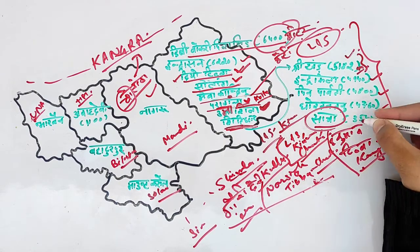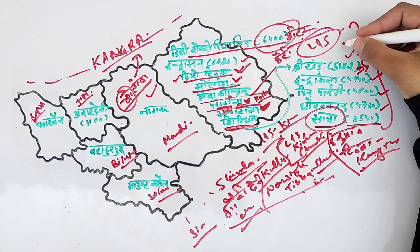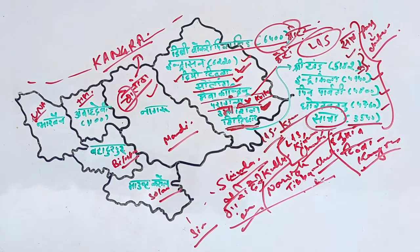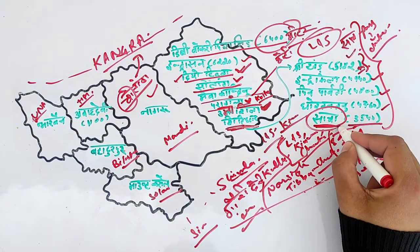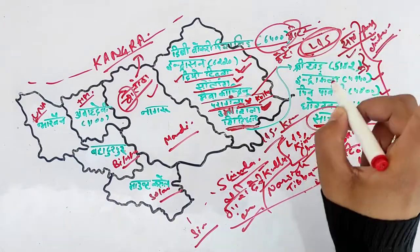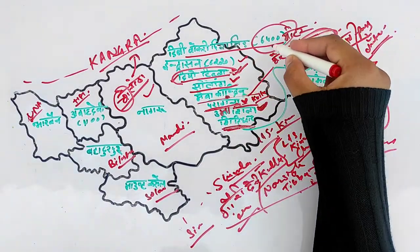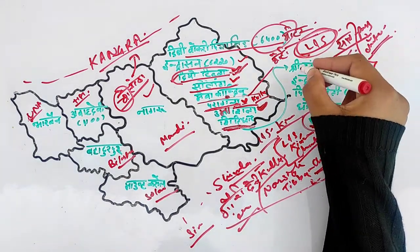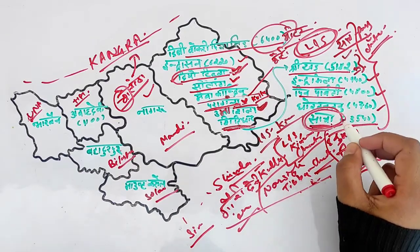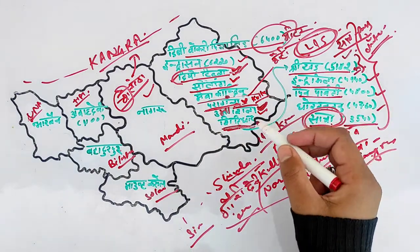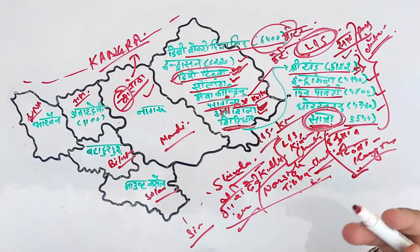Shrikhand Mahadev height is 5182 meters. Then comes Indrakhila, Pin Parvati, and Sacha Choti — whose height is 3540 meters. Don't confuse Sacha Choti with Saach Pass. Saach Pass is in Chamba. So Sacha Choti is in Kullu, but Saach Pass is in Chamba. Similarly, Parangla Choti is in Kullu but Parangla Dara is in Lahaul Spiti. Diyo Tibba is in Kullu, Hanuman Tibba is in Kangra, and Gauri Devi ka Tibba and Narsing Tibba are in Chamba. The most important peaks of Kullu are Shrikhand Mahadev, Indrakhila, Pin Parvati, Sacha, Devi Tibba Pyramid, and Uma Shila.